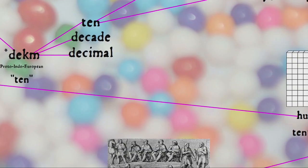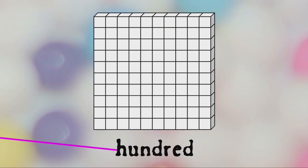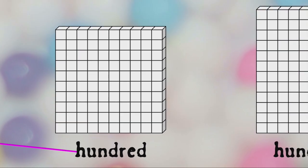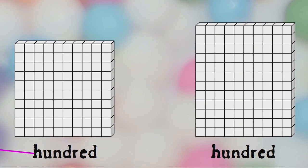Of course, speaking of a hundred, a hundred at least in Germanic languages did not originally mean one hundred. It originally meant one hundred and twenty, but when Latin arrived on the scene with 'kentum' referring to the number one hundred, the word hundred eventually changed its meaning.